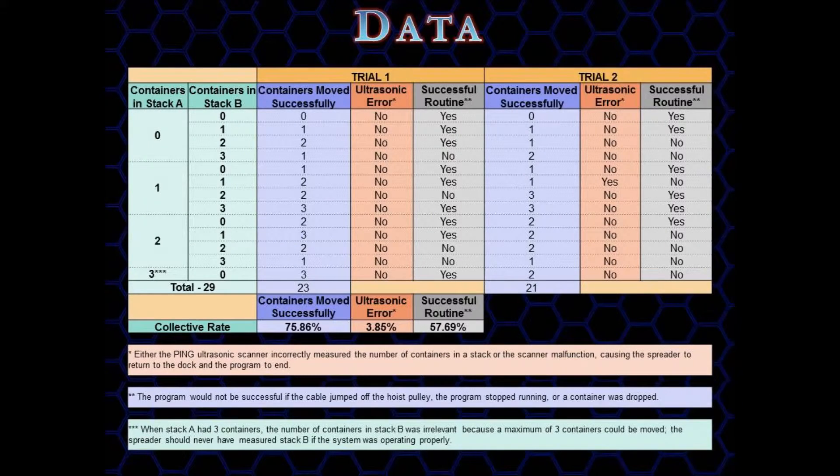The crane system was tested twice with each boat-stack configuration, with data collected for the number of successfully moved containers, the occurrence of ultrasonic errors, and the success of the routine. When there were three containers in stack A, multiple trials were not conducted for varying containers in stack B. Since a maximum of three containers could be moved, the docked stack would be full before the spreader could move to stack B, so the number of containers in stack B would be irrelevant.